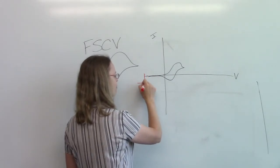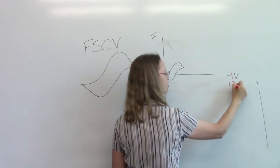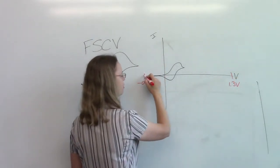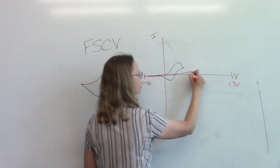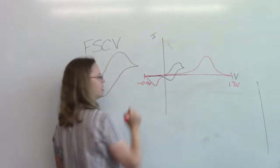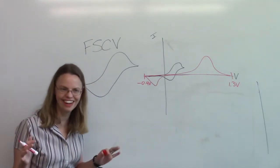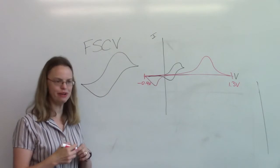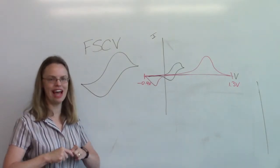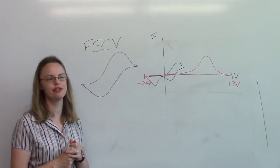For FSCV though, we tend to scan from minus 0.4 volts all the way up to 1.3 volts and back. So if I were to show you an FSCV trace, it looks something like this. So it looks completely different than the slow scan.